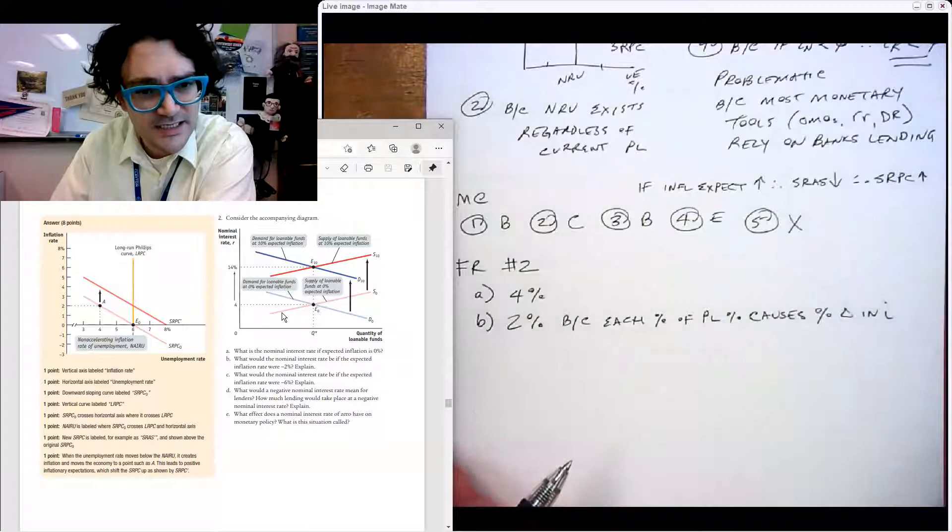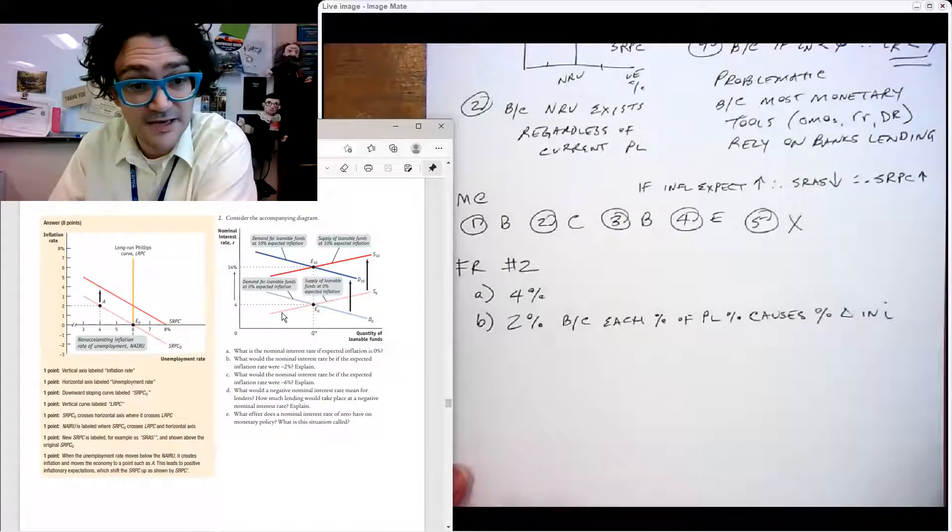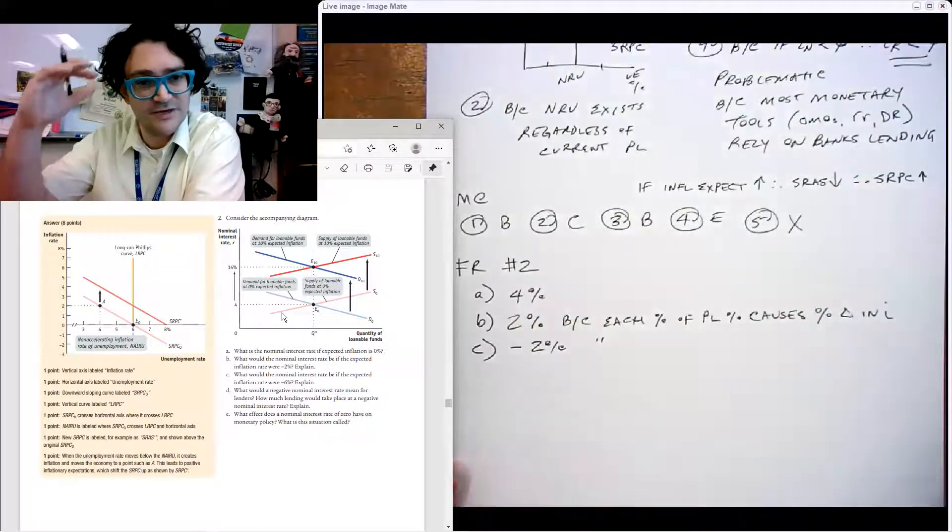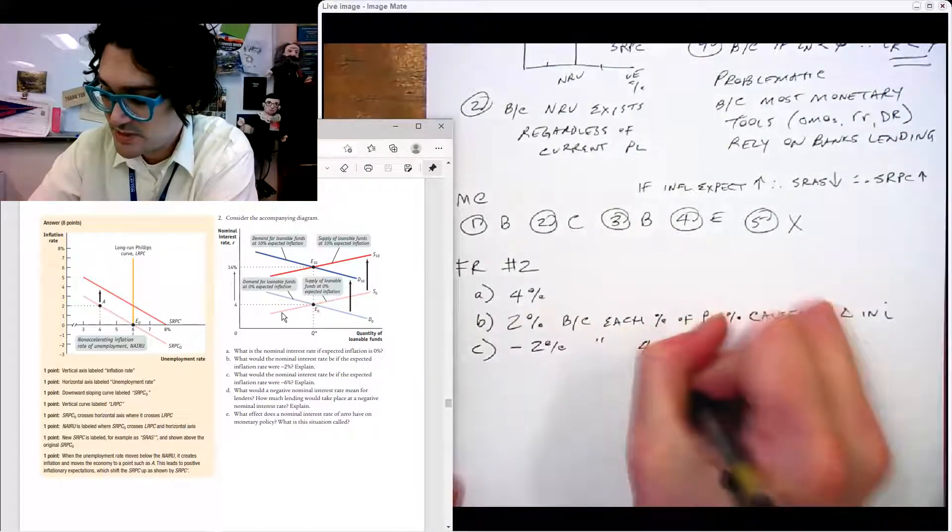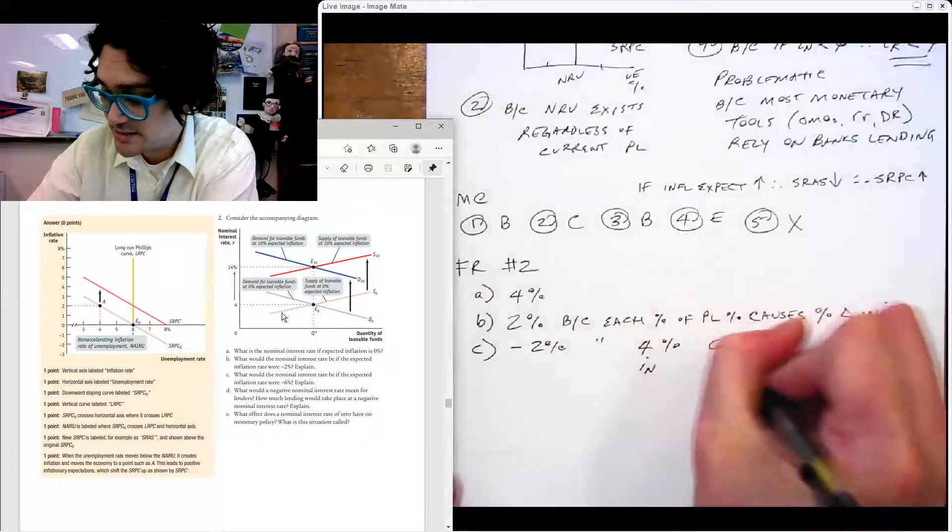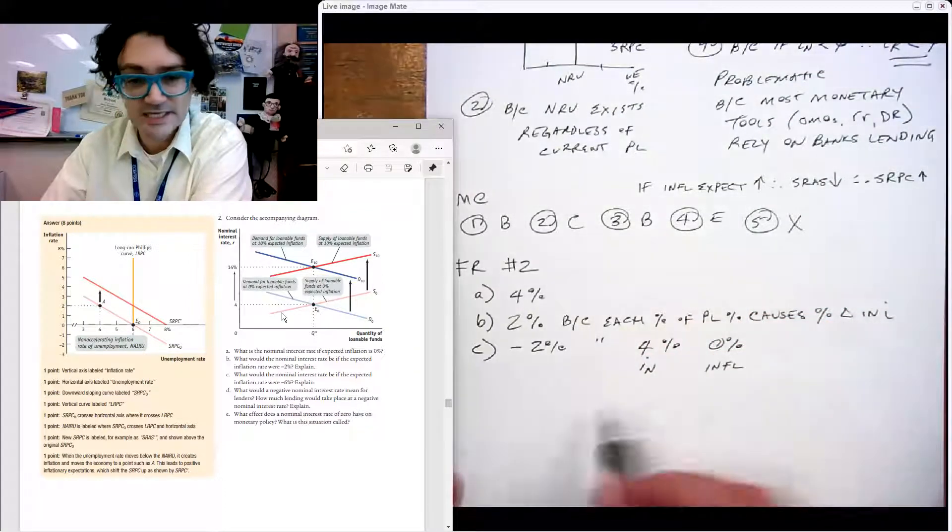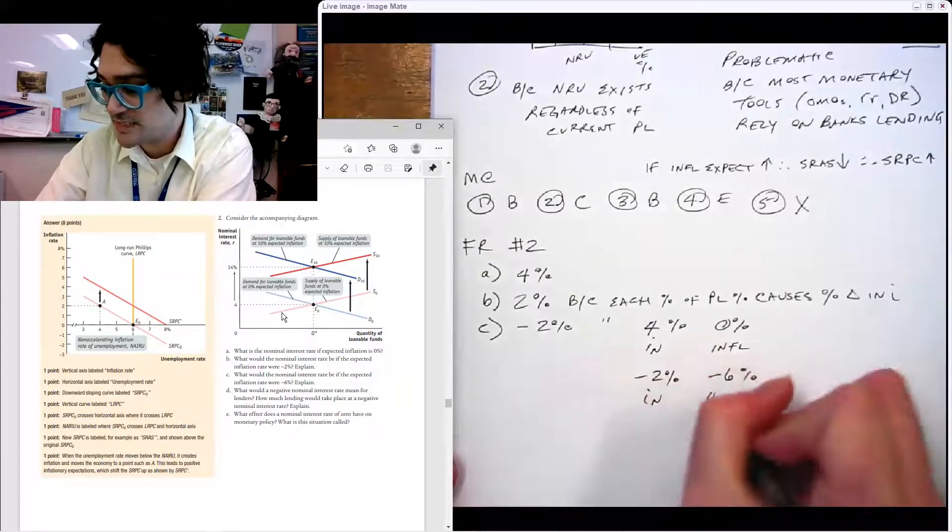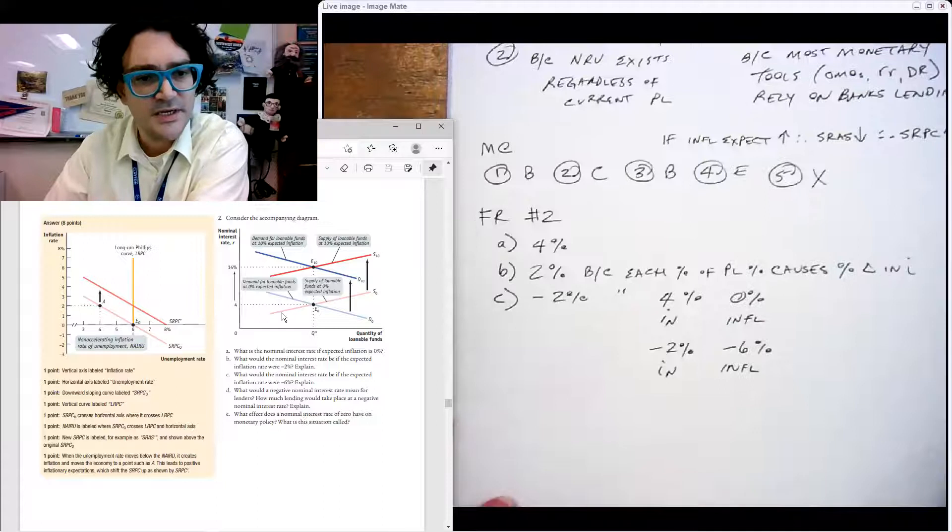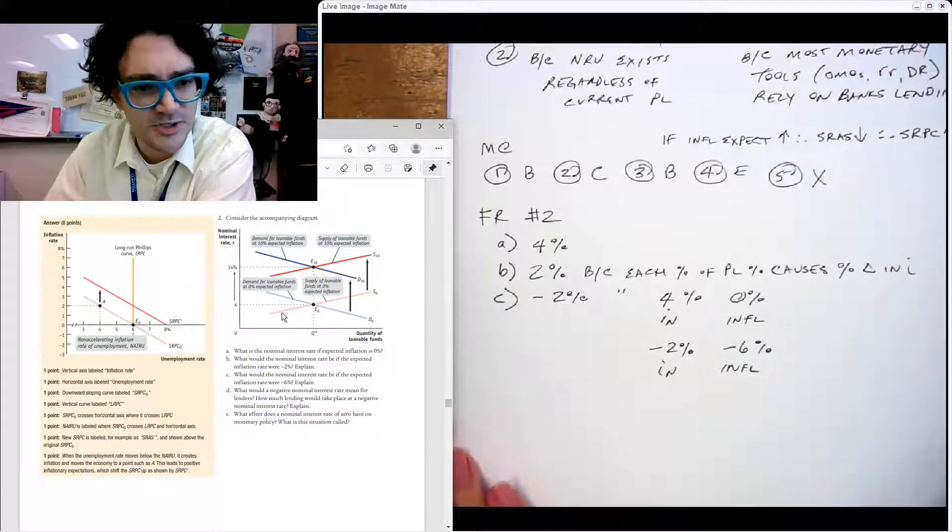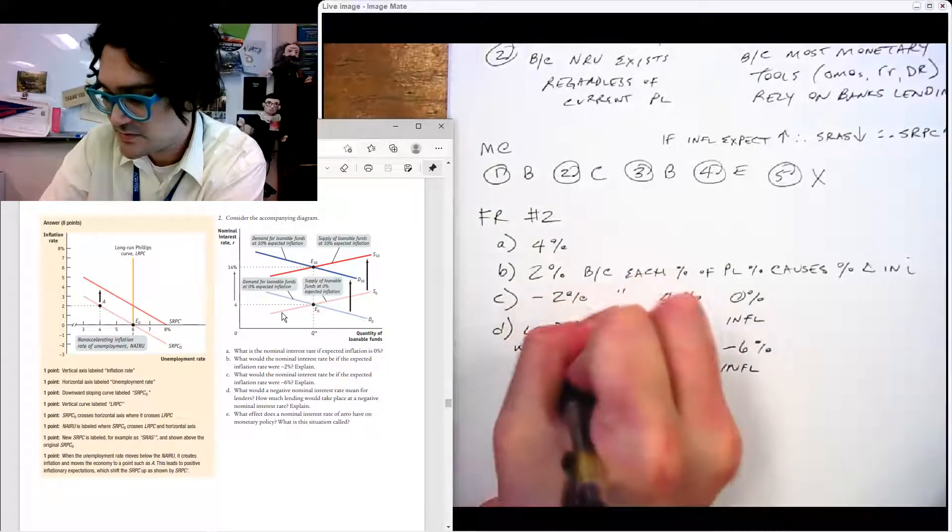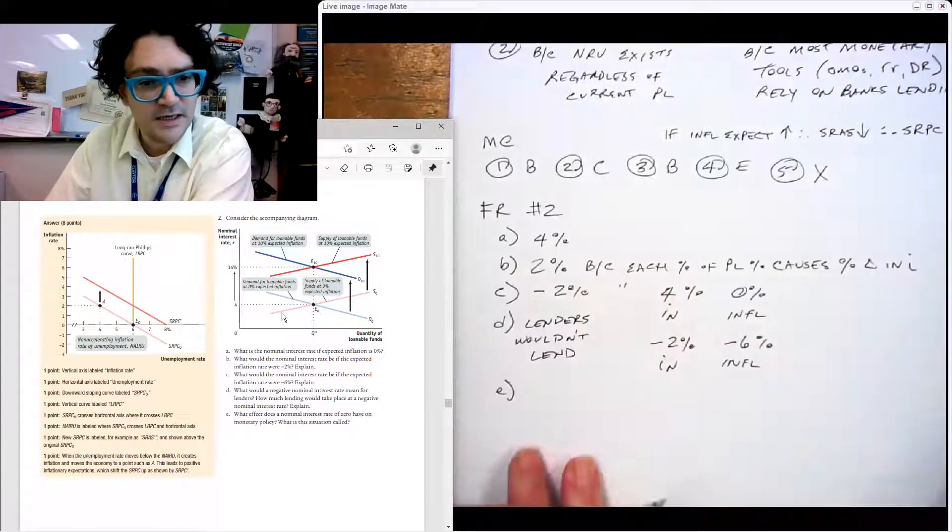Normally the real interest rate is on that axis. C says what would the nominal interest rate be if the expected inflation rate was negative six? So it would actually be negative two. C is negative two percent, it's the same reasoning. You're going from four percent interest rate nominal at zero percent inflation, and if the expected inflation is negative six, then this one has to be negative two percent. D says how would a negative nominal interest rate mean for lenders? Lenders would say this is bogus, lenders wouldn't lend and they wouldn't make any money.